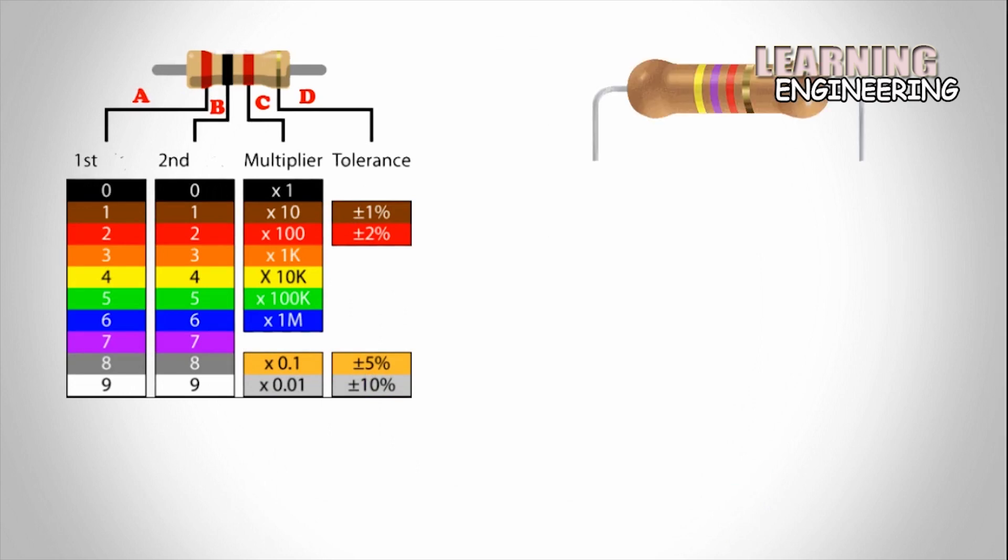For example, a resistor with bands of yellow, violet, red, and gold has first digit 4, second digit 7, followed by red 100 to give 4,700 ohms.